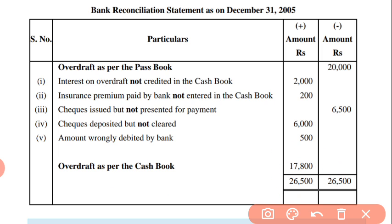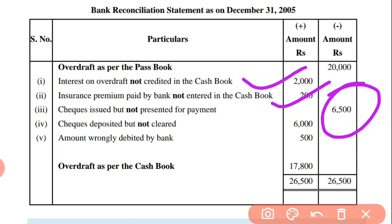To repeat: interest on overdraft not credited in cash book — as per cash book it is minus, so here it becomes plus, because we are preparing as per cash book. Insurance premium is an expense — in the cash book it is minus, so in the passbook it will be plus. Check issued but not yet presented for payment — it is a plus item in the cash book, but here as per passbook it becomes minus. Check deposited but not yet cleared — when cleared it would be minus in the cash book, but as per passbook we add it as plus.